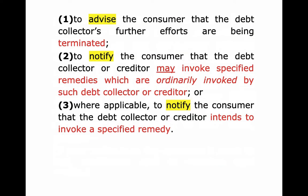Then they cannot communicate with you — except for three exceptions, which I've highlighted in yellow. The thread through all three is that they are to advise or notify you. Exception one: advise the consumer that the debt collector's efforts are being terminated. That's interesting — you say 'don't ever contact me again,' so they write back to say 'we're not going to contact you again.' It may seem silly, but at least you know your letter worked.